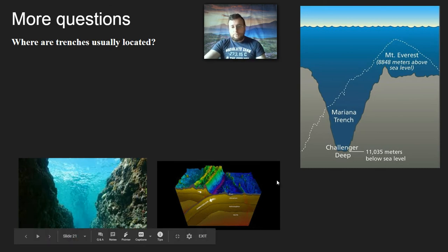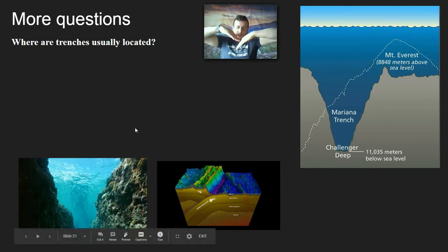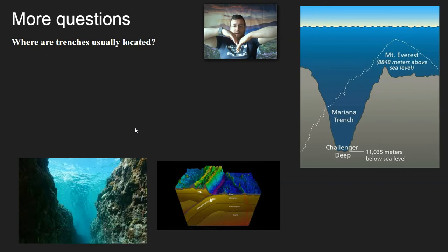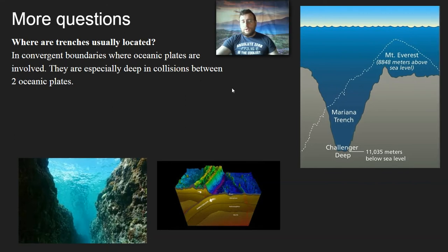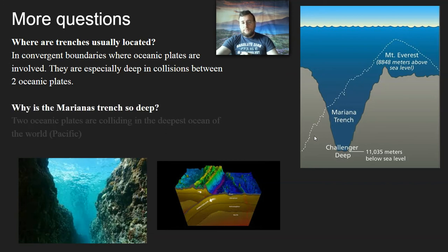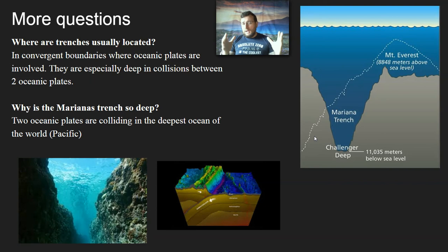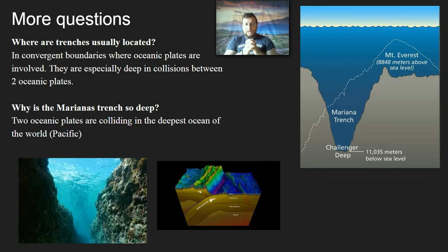Trenches are large gaps in the bottom of the seafloor that happen near the edge as the sea floor sinks underneath. If you were to go to that gap, you would just see rock next to another rock — of course there's no sunlight down there because it's super deep. Whenever there is a trench between two oceanic plates, they will be especially deep. The Marianas Trench in the Pacific is a great example — the Pacific is already the oldest ocean on the planet and is really deep, and going even deeper due to a subducting plate results in a trench over 11,000 meters deep, which is much deeper than Mount Everest is tall — over 33,000 feet.